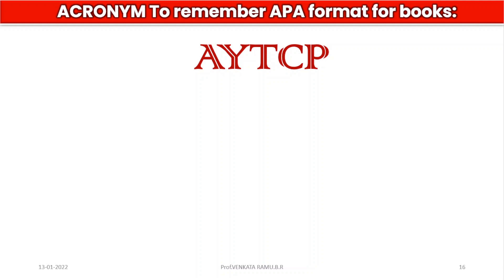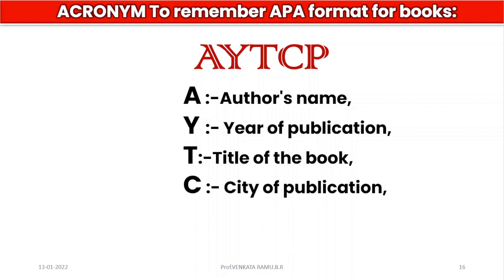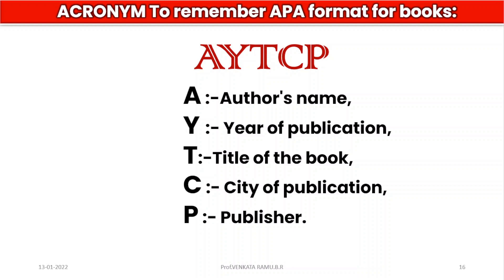The acronym for the APA format for books is AYTCP. A stands for author's name, Y stands for year of publication, T stands for title of the book, C stands for city of publication, and P stands for publisher. This acronym will help you easily remember the structure of writing bibliography in the APA format for books.